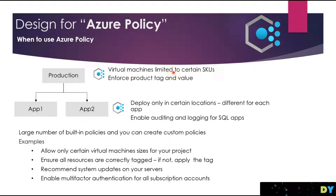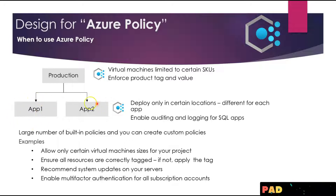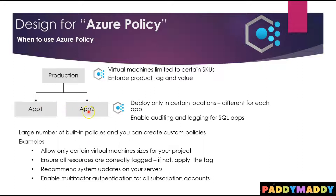Another example is deploying resources only to certain locations for each application. You have Application One and Application Two — one might be restricted to the UK region and the other to the Australia region. You can achieve this with the help of Azure Policies, which helps you enforce those location-based restrictions.